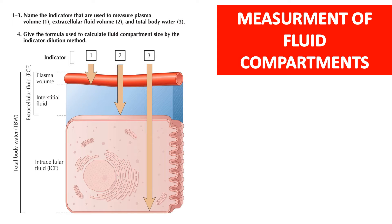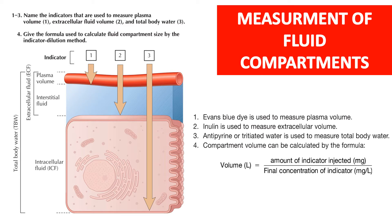Measurement of fluid compartments: name the indicators used to measure plasma volume, extracellular fluid volume, and total body water, and give the formula used to calculate fluid compartment size by the indicator dilution method. Evans blue dye is used to measure plasma volume. Inulin is used to measure extracellular volume. Antipyrene or tritiated water is used to measure total body fluid. Compartment volume can be calculated by the formula: volume equals amount of indicator injected divided by the final concentration of indicator in milligrams per liter.